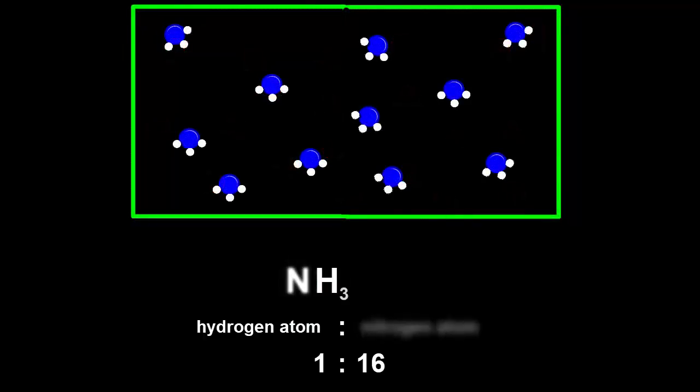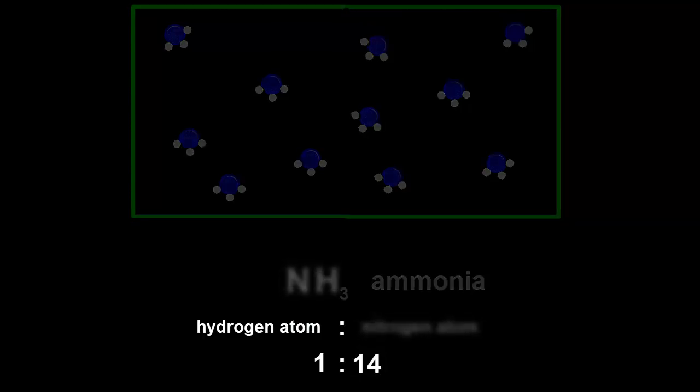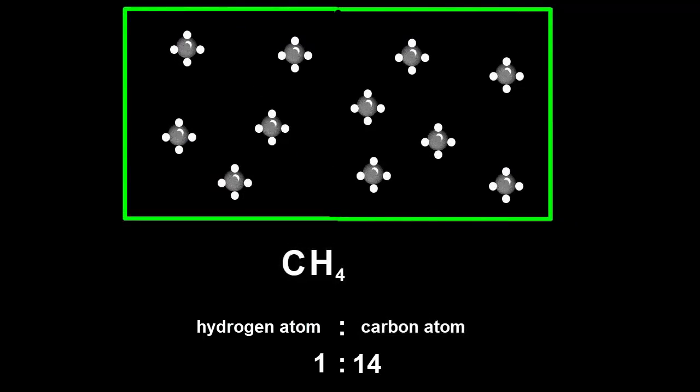A similar experiment between hydrogen and nitrogen to make ammonia, NH3, showed that a nitrogen atom is 14 times heavier than a hydrogen atom. And combining hydrogen with carbon to make methane, CH4, showed that a carbon atom is 12 times heavier than a hydrogen atom.